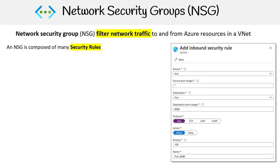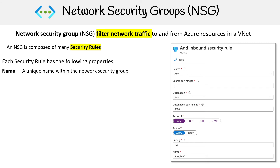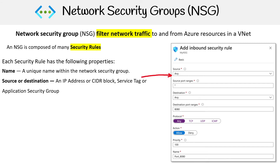Here's an example of setting an inbound security rule. Each security rule has the following properties: you can give it a unique name, which is all the way at the bottom there. You can set the source or destination, so you're going to set an IP address, CIDR block, service tag, or application group. Then you set the port range.